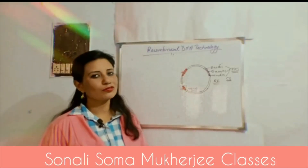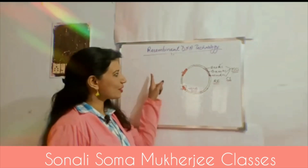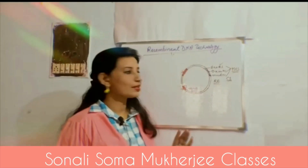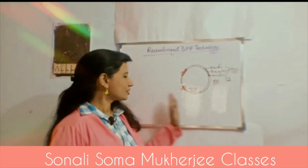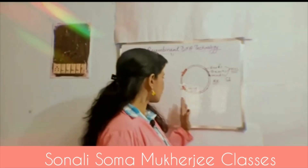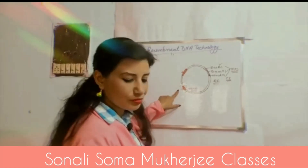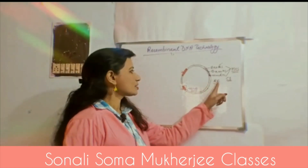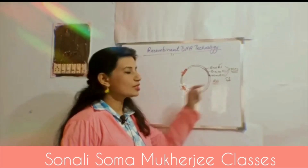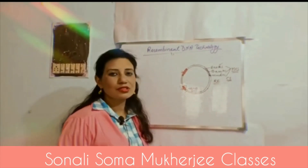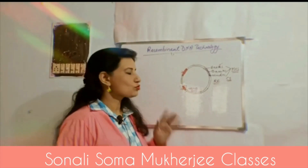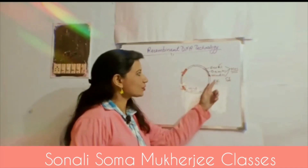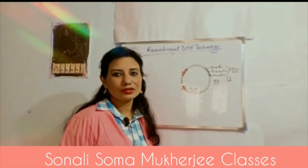This is the last lesson of vectors. You can see the diagram I have drafted, showing the origin of replication, the selectable marker, and the restriction site — the basic components I've drawn for our cloning vector. These three are the basic requirements I know for cloning vectors.